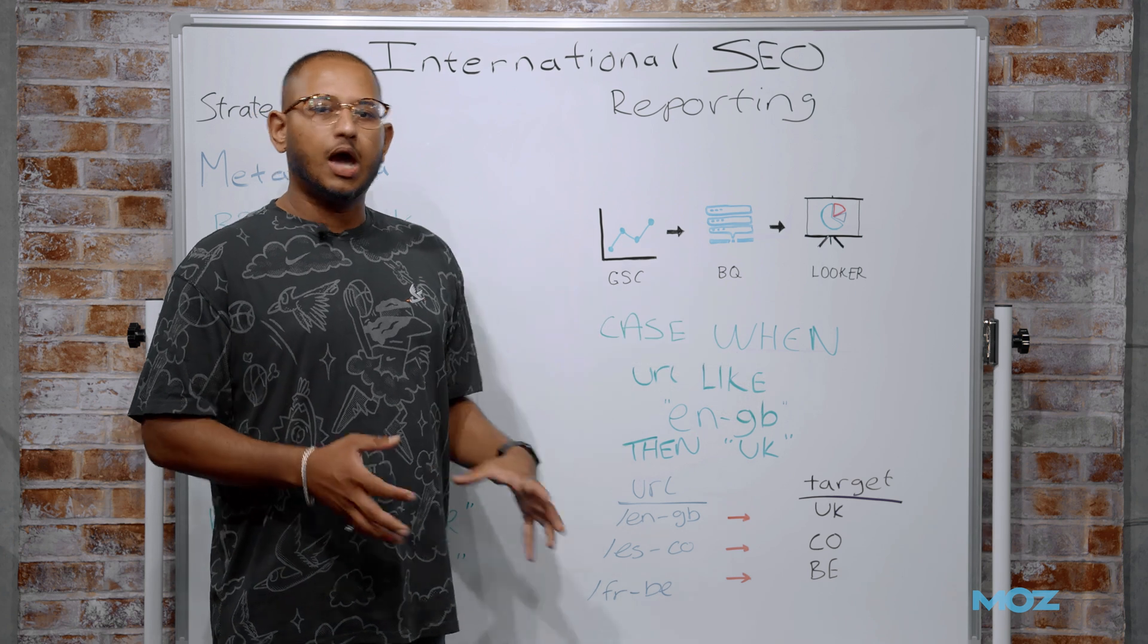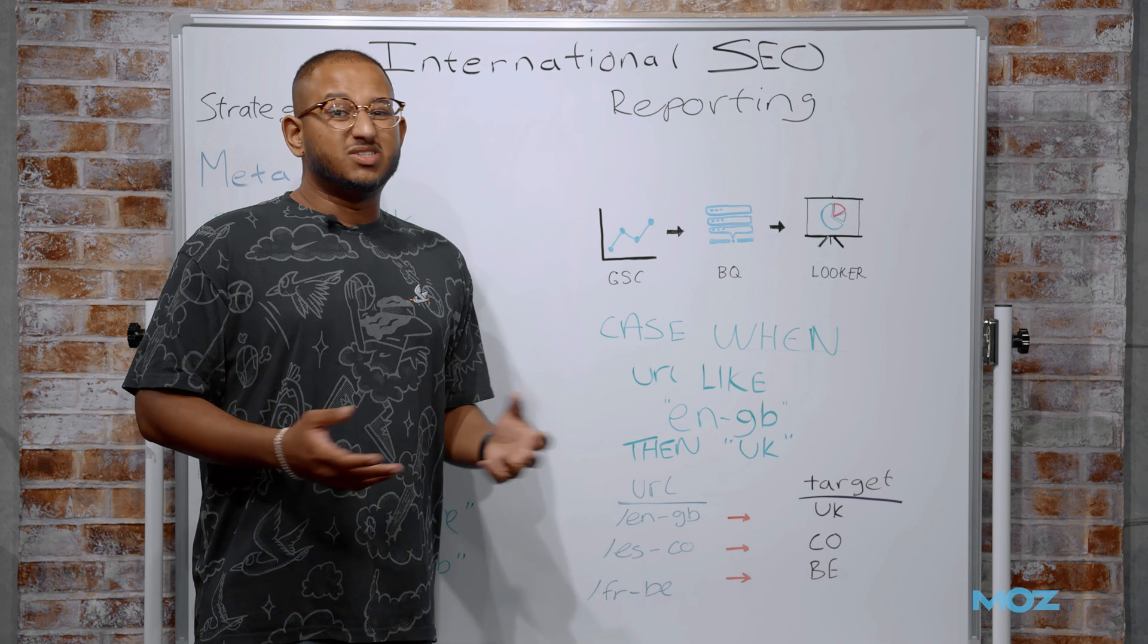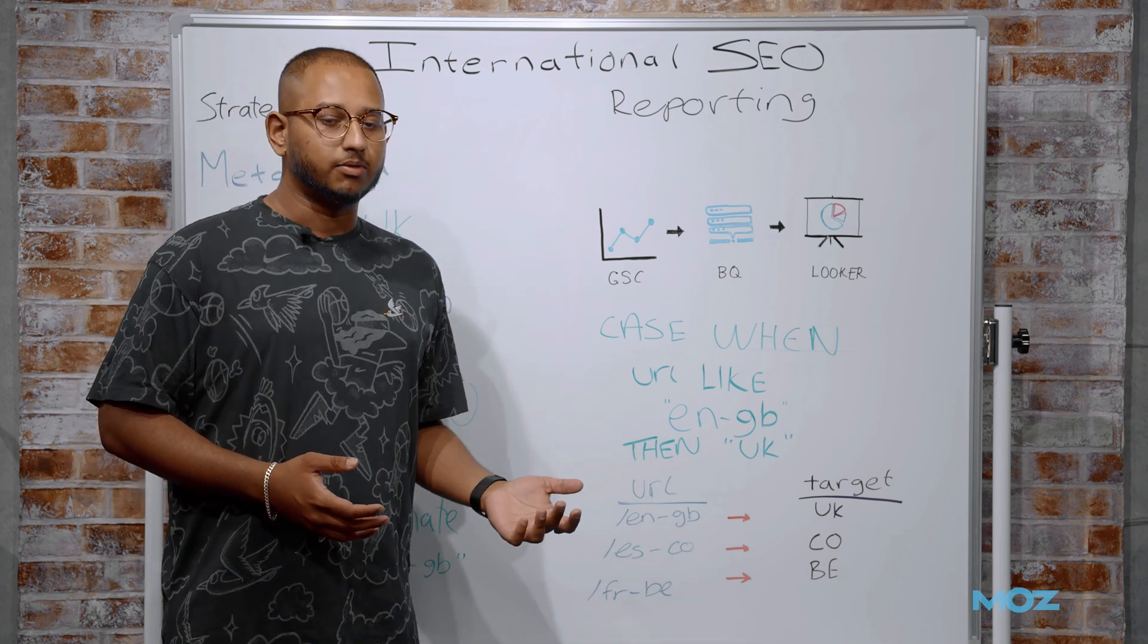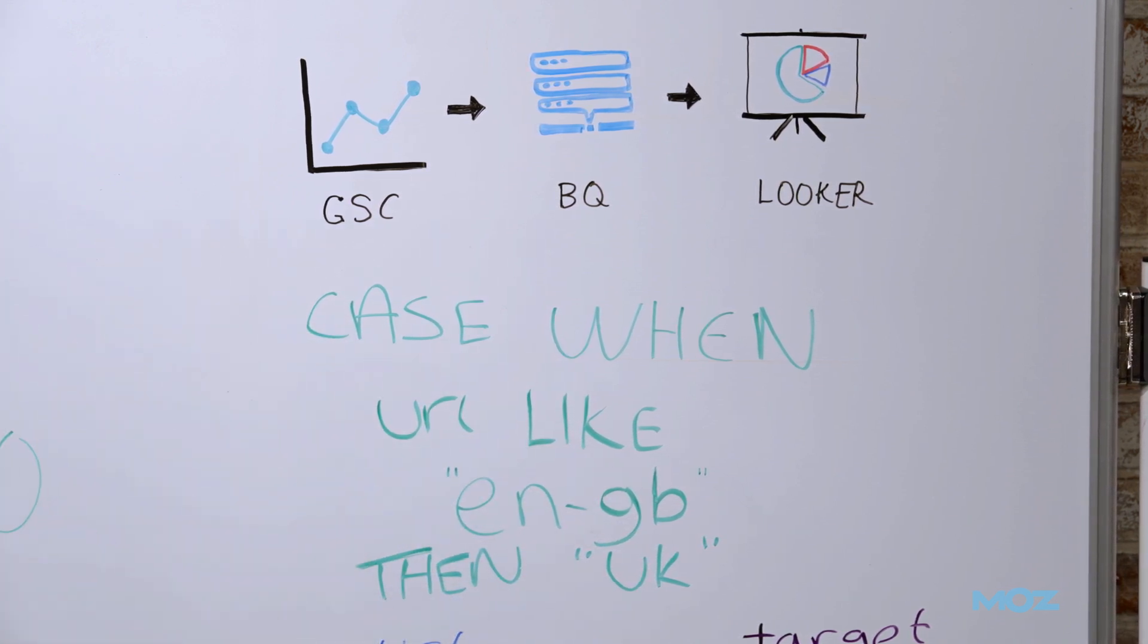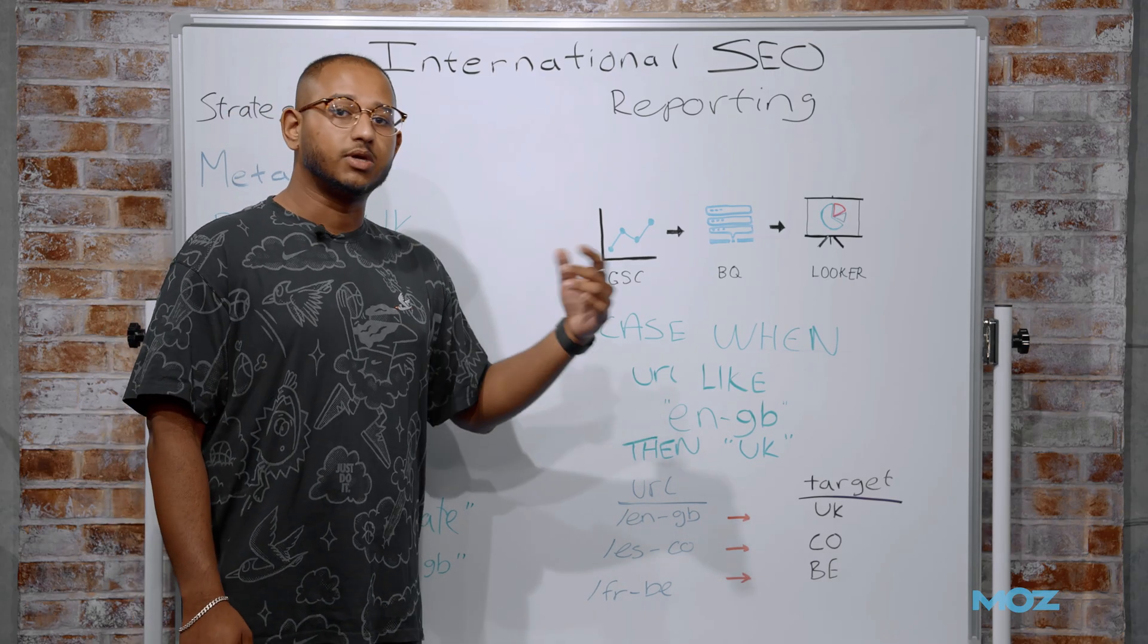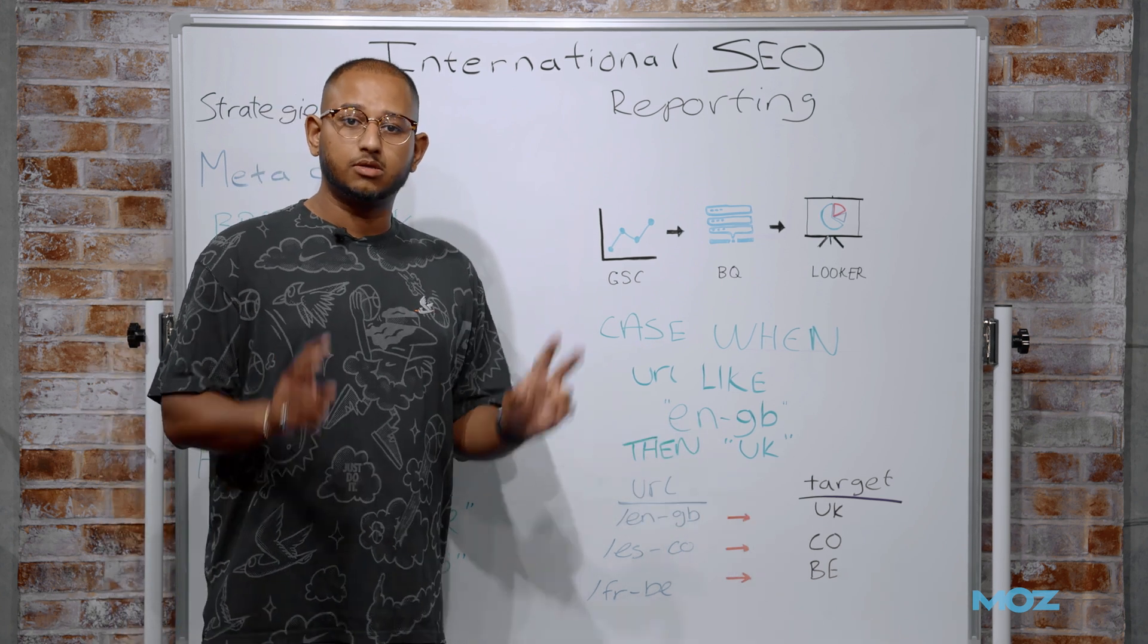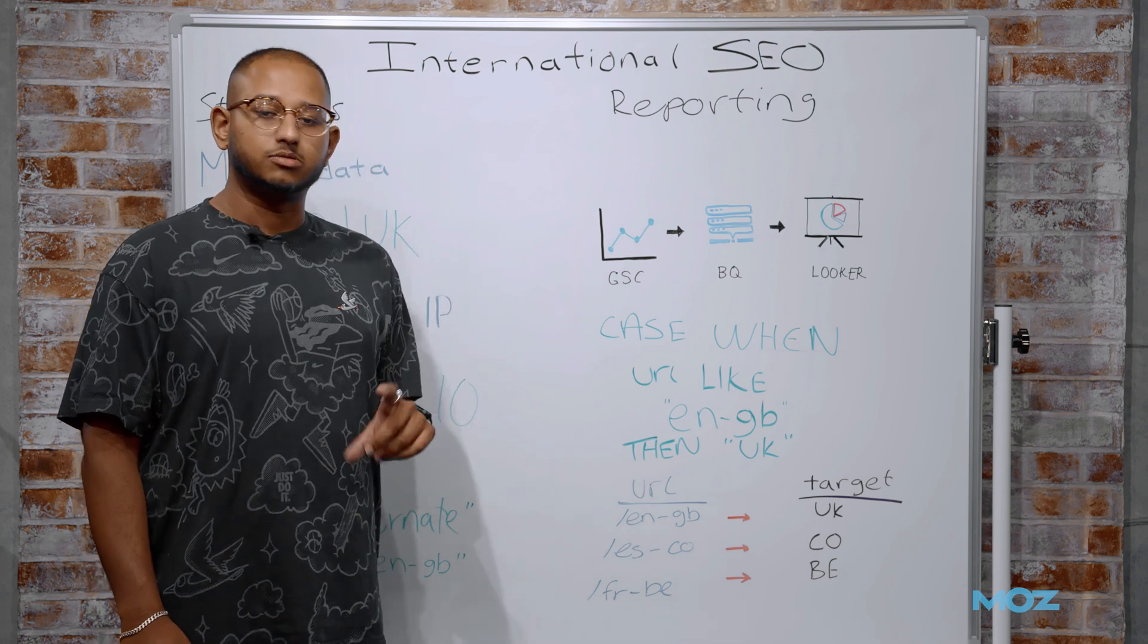So when we're in BigQuery, how do we actually build this dashboard? BigQuery uses SQL, which is just the programming language. If you've used something like Excel, you can think about it like that. It's essentially an Excel formula, but within BigQuery. And what this statement is doing is, it's saying, when our URL, which is just a column of data within BigQuery, is like, and all we're saying with this like is, if we think about it in Excel and filtering, contains, EN GB is just the URL slug. Then we want to categorize it as the UK.